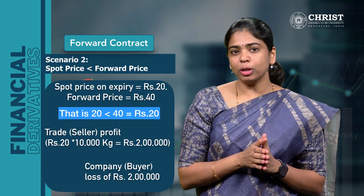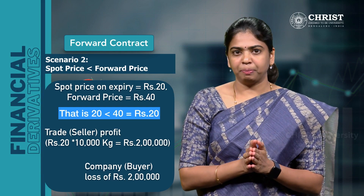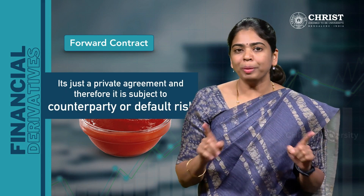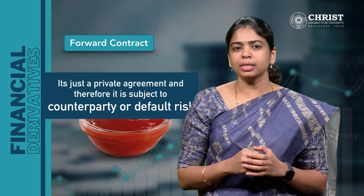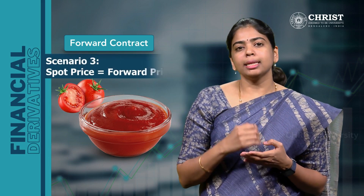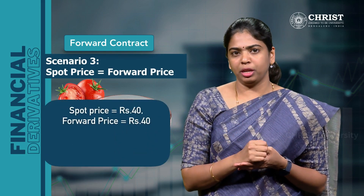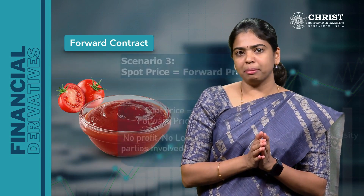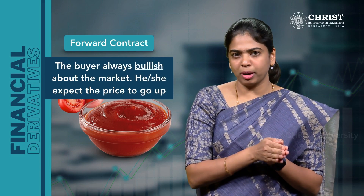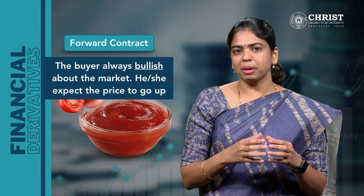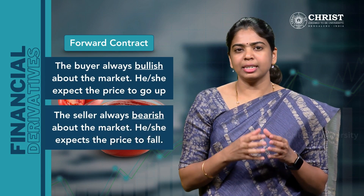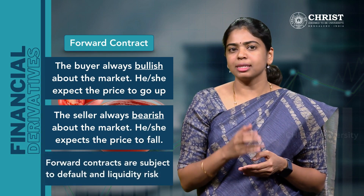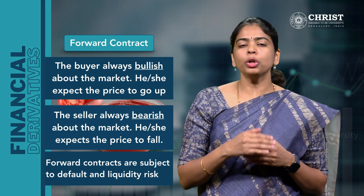Now, what if the company refuses to fulfil its obligation? The trader is bound to suffer. Remember, a forward contract is just a private agreement and therefore it is subject to counterparty risk or default risk. There is no mediator to ensure that both parties fulfil their obligations. In scenario 3, where the spot price at maturity is ₹40 per kg — the same as the agreed price — there is no profit and no loss for both parties. So always remember: in a forward contract, the buyer of the underlying asset is always bullish and expects the price to go up, while the seller is always bearish and expects the price to fall. In a nutshell, forward contracts are subject to default risk and liquidity risk.